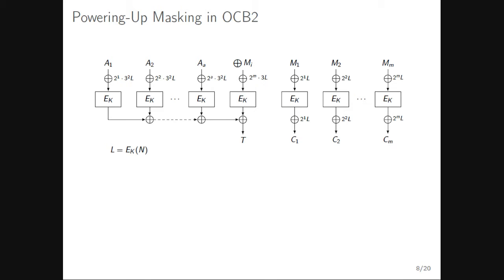In OCB2, the mask is constructed by taking the encrypted nonce value L, multiplying it by 2^1 * 3^2, then multiplying by two for each successive block through all associated data blocks. The same is done for the message blocks, with 3^2 omitted for domain separation — ensuring no mask collisions between different blocks. The mask update is efficient, just a shift and XOR.